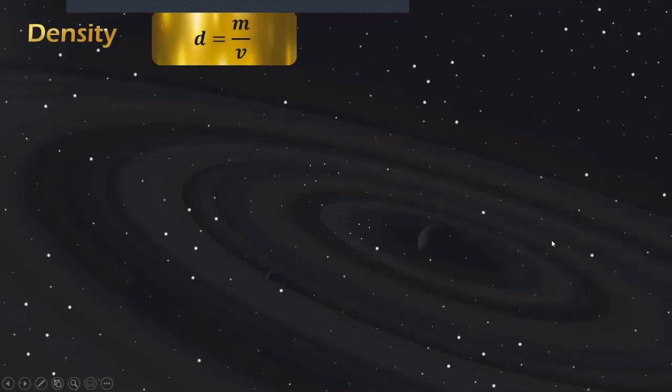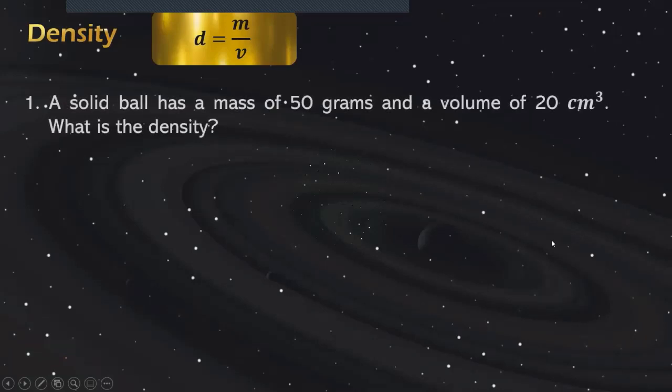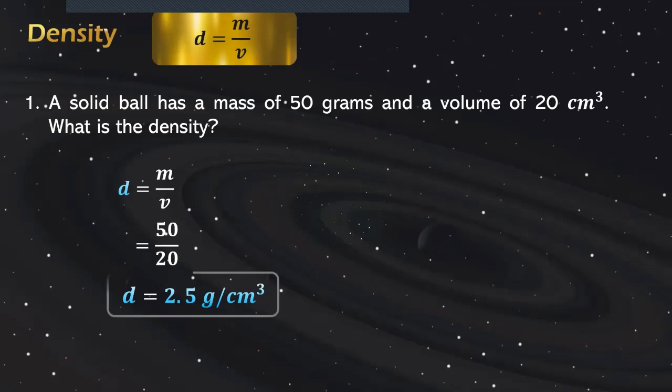Let's have an example. A solid ball has a mass of 50 grams and a volume of 20 cubic centimeters. What is the density? Copy the formula, substitute the value of mass as well as the value of volume. We have 50 over 20, get the quotient. The density of the solid ball is 2.5 grams per cubic centimeters.